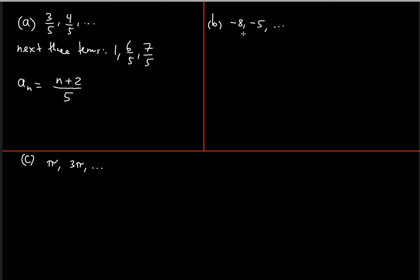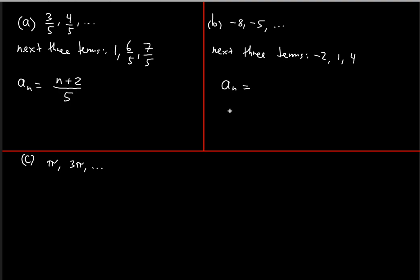Now for part B. The common difference here is three: negative eight plus three is negative five, plus three is negative two. So the next three terms are: negative two plus three is one, plus three is four.